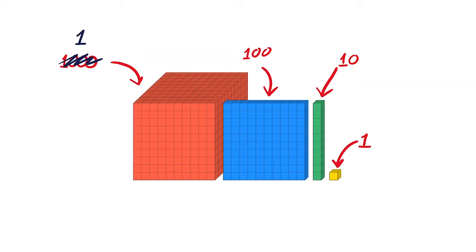Now we know that we use 10 blues to make a red. That means that the blue is one tenth of the red, which is 0.1.